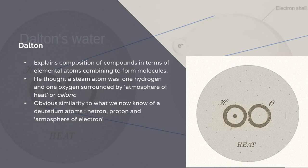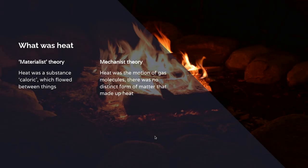And there's an obvious similarity to what we now think of as, for example, a deuterium atom with a neutron and a proton, because he thought that the atoms were surrounded by an atmosphere of heat or caloric. We now think of an atom as having a nucleus surrounded by what you could say is a cloud of electrons. People don't say an atmosphere, but the term cloud is used in popular science presentations.